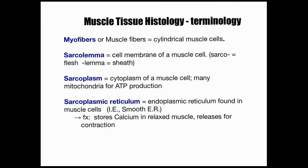Now let's go over muscle tissue histology — basically, what is muscle tissue and what are muscle cells actually made of? The first thing is called myofibers or muscle fibers — that's basically just the muscle cells themselves. They're cylindrical, kind of like a tube. The next thing is called the sarcolemma. All cells are surrounded from their environment by a cell membrane or plasma membrane, and it's the same with muscle cells — their plasma membrane is called the sarcolemma.